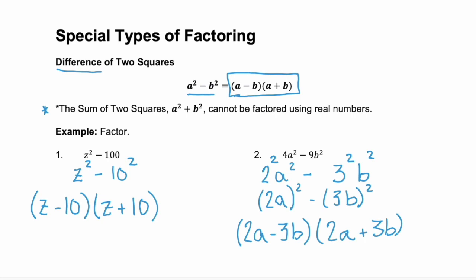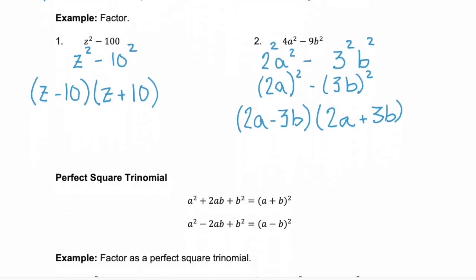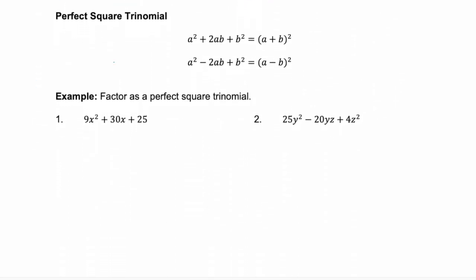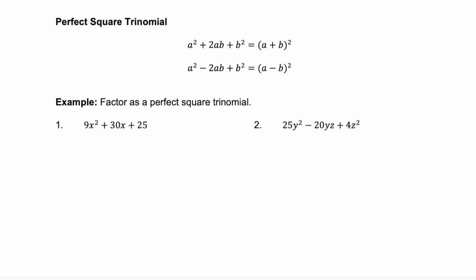Let's look at the second example of special types of factoring. With perfect square trinomials, notice that the first and the last terms are perfect squares, and that twice the product of their square roots equals the middle term. Or that your first term is a squared, your middle term is 2ab, and your last term is b squared. And then the sign of that middle term tells you the sign of your factor.